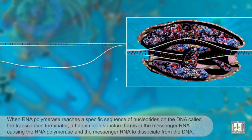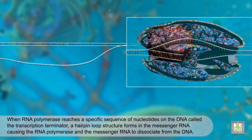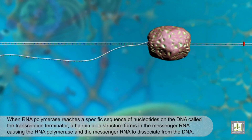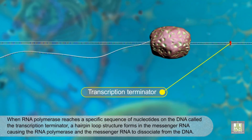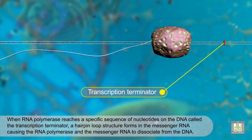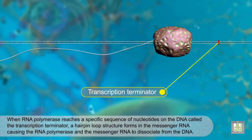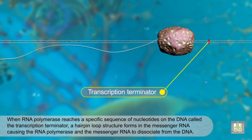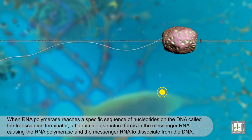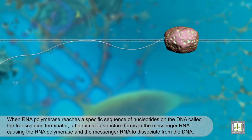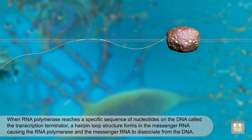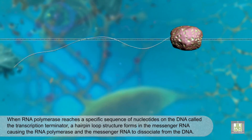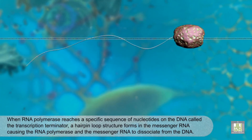When RNA polymerase reaches a specific sequence of nucleotides on the DNA called the transcription terminator, a hairpin loop structure forms in the messenger RNA, causing the RNA polymerase and the messenger RNA to dissociate from the DNA.